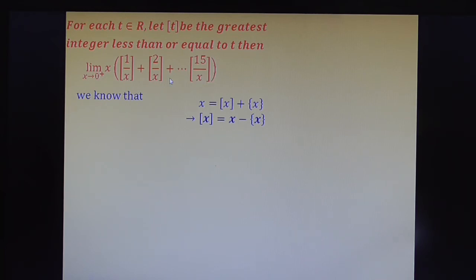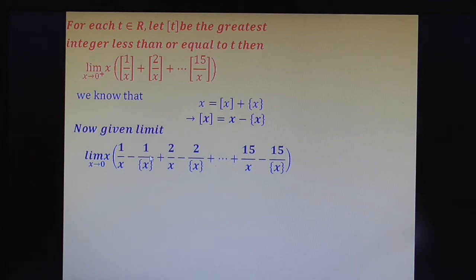So substitute here. Now the limit can be written as limit x tends to 0. Here this is by applying this concept: 1/x minus fractional part of 1/x plus 2/x minus fractional part of 2/x up to so on. Now arrange this. First write 1/x plus 2/x plus up to 15/x as one part, that is without fractional part of x. One part, next all fractional part of x is another part.